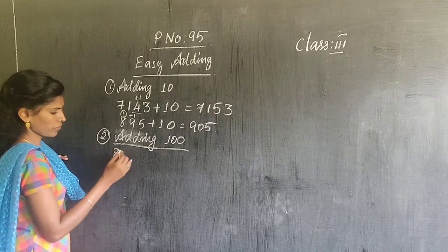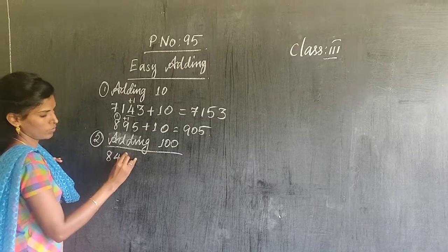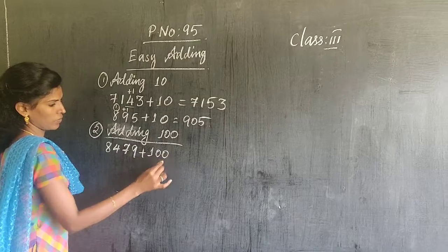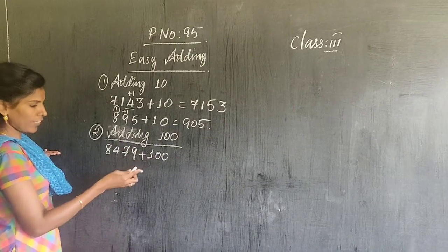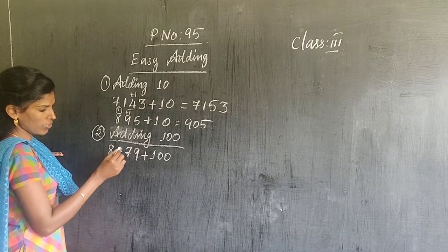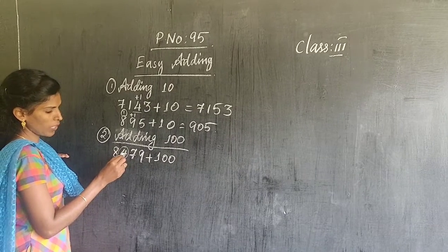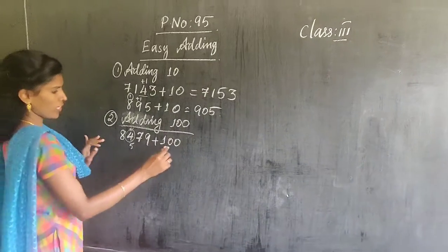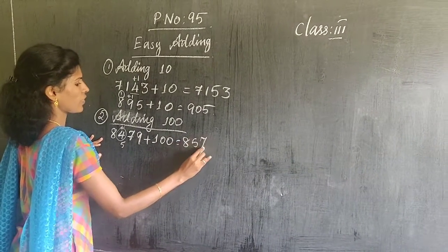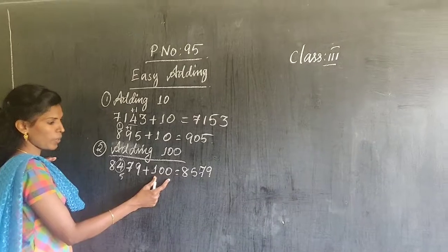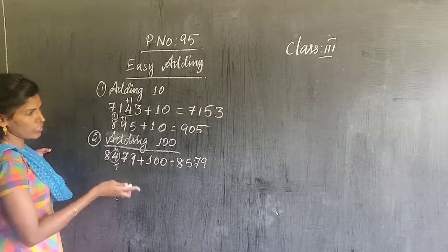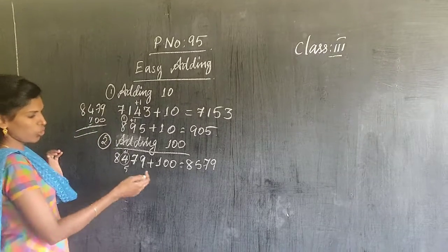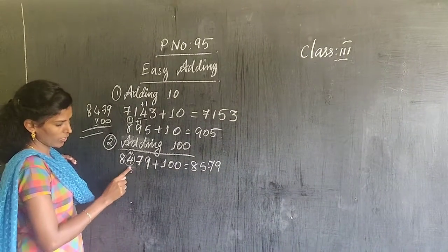Now suppose you have a number and you have to add 100. The hundreds place will change — the number in the hundreds place is 4, so this will increase by 1. 4 plus 1 is 5, so the answer will be 8579. Since it is a bigger number, no need to add digit by digit — 8, 4, 7, 9 and 100. Don't go for the long process. Just in the hundreds place, add 1 and you can get the answer.